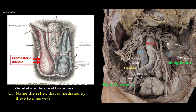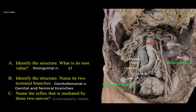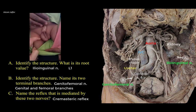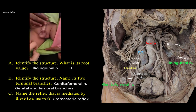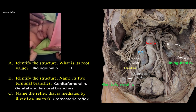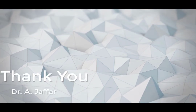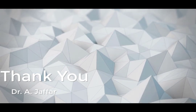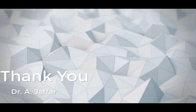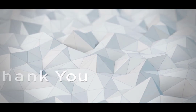The cremasteric reflex is described as contraction of the cremaster muscle, elicited by lightly stroking the medial aspect of the upper thigh — the area supplied by the ilioinguinal nerve, L1 — usually with an applicator stick. This contraction of the cremaster muscle results in elevation of the testis on the same side. The muscle is supplied by motor fibers from the genital branch of the genitofemoral nerve, which has a root value of L1 and L2. The reflex is very active in children.